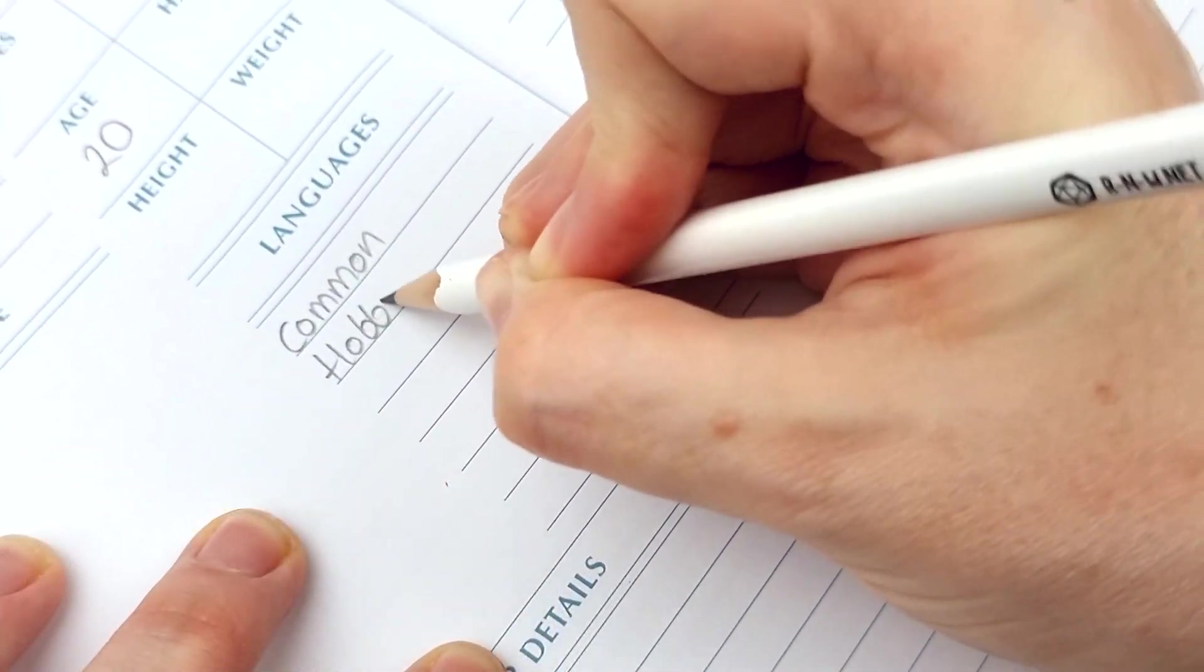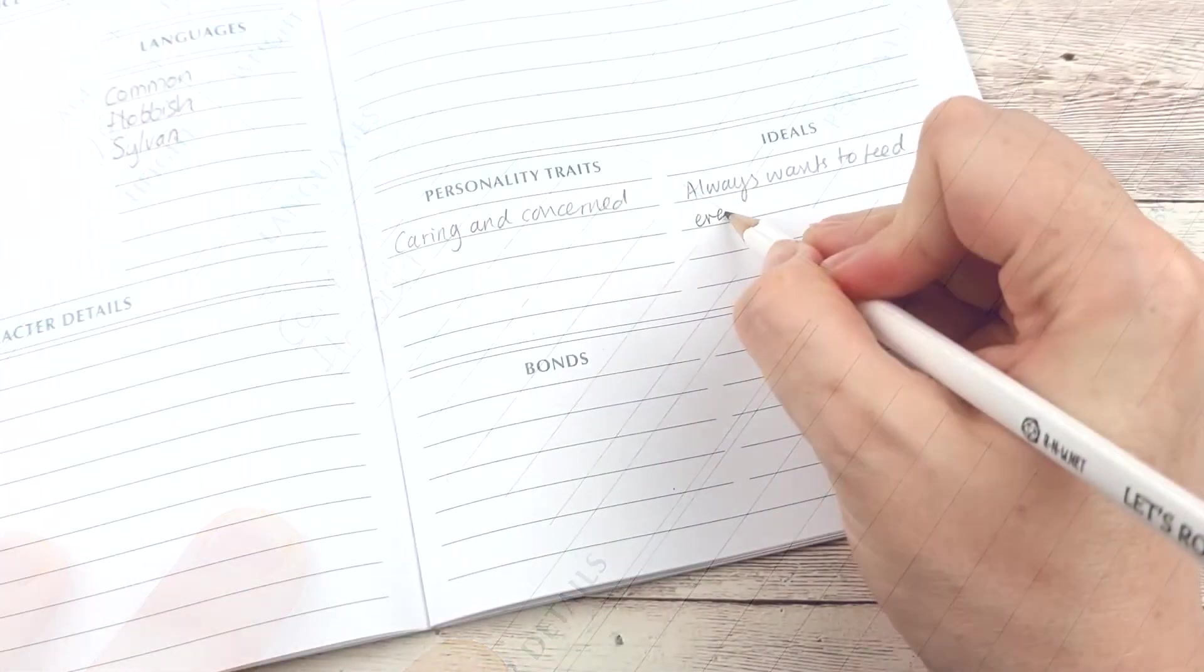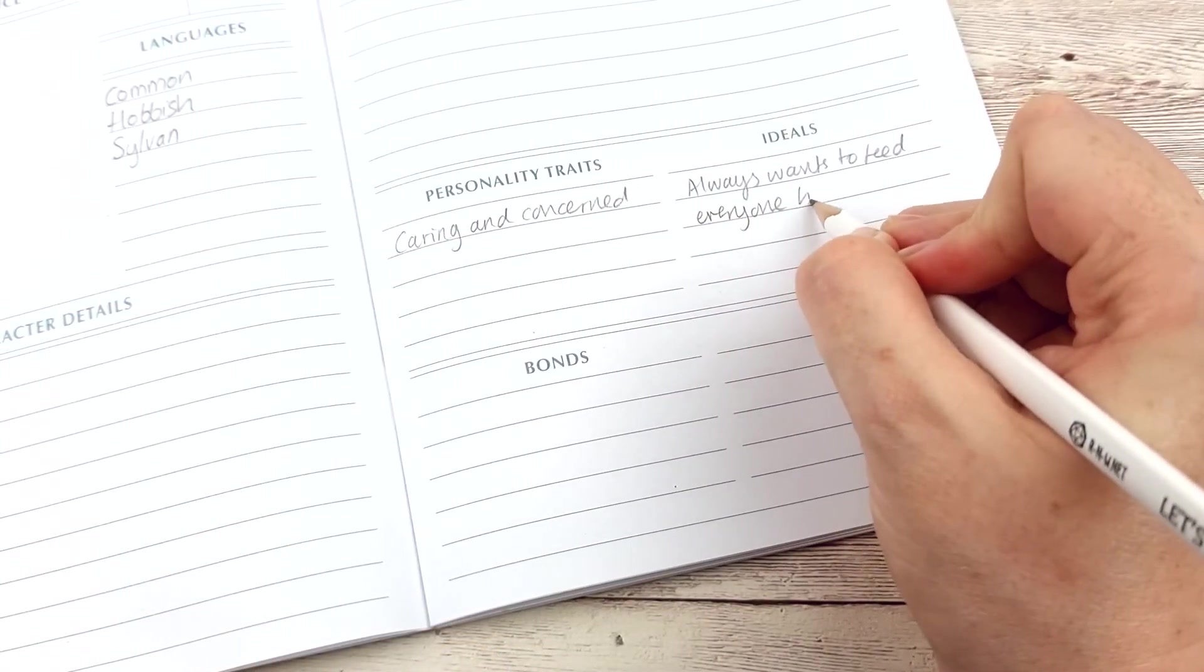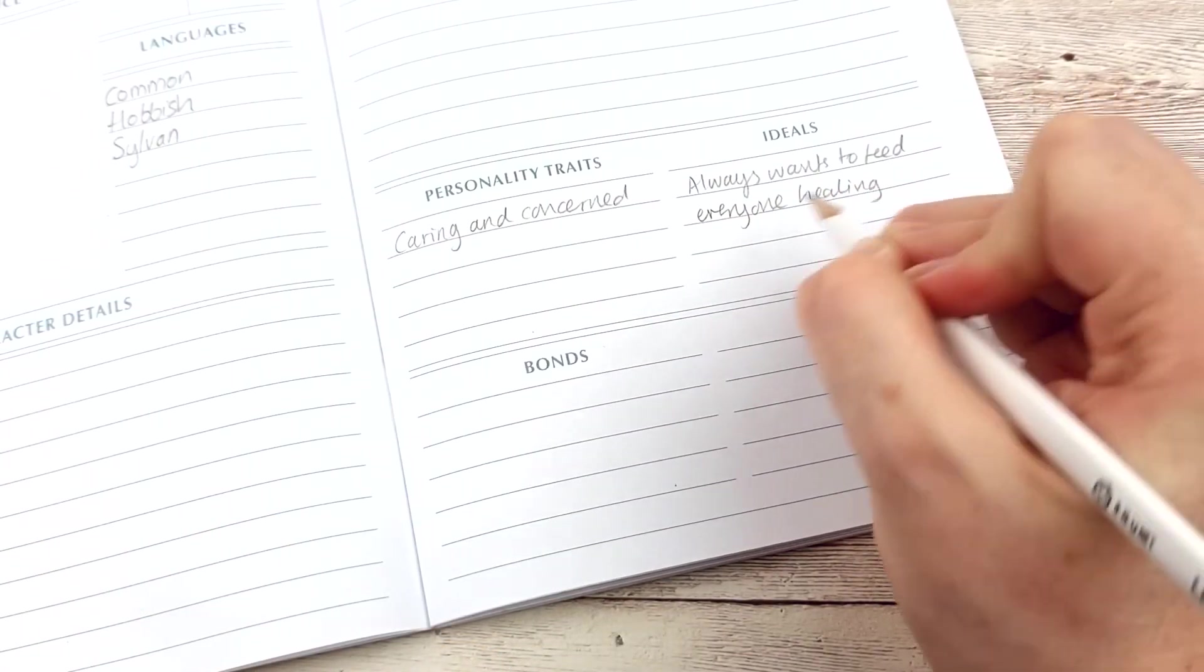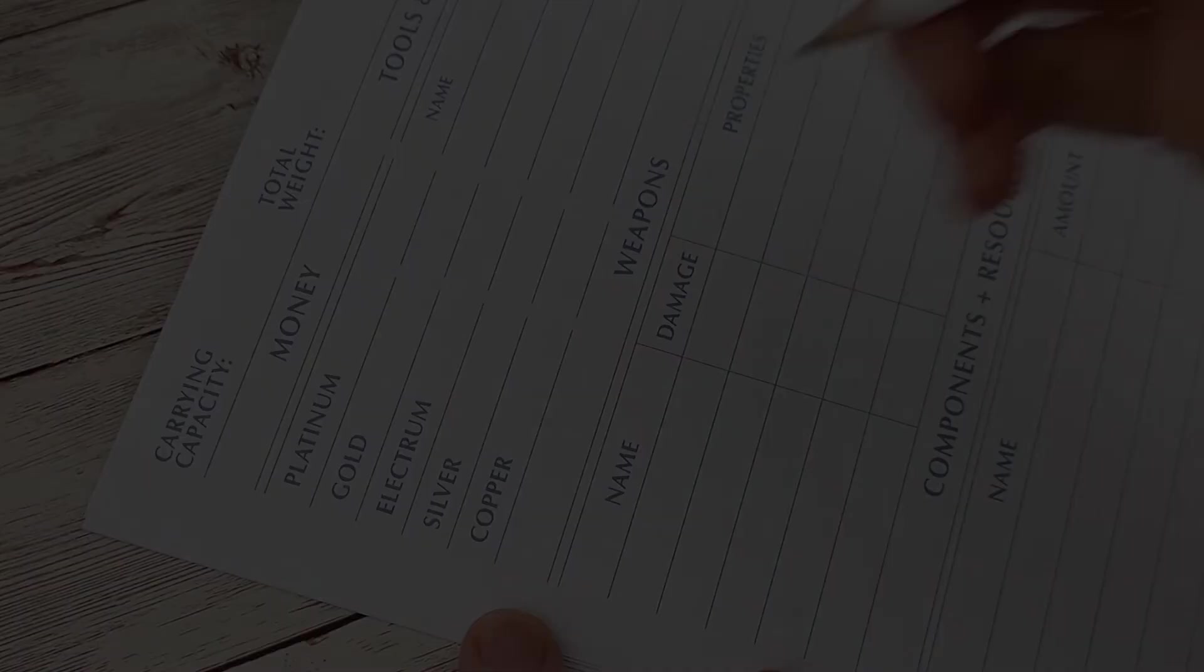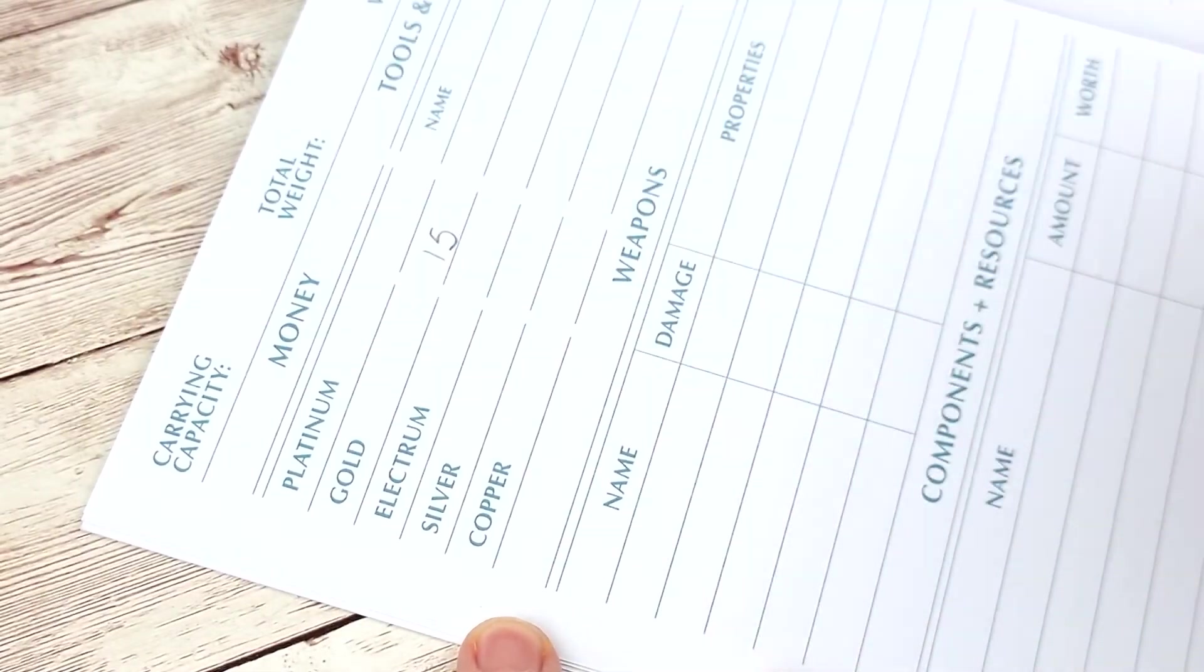On your role playing sheet you can add which languages you know and your personality traits and if you don't like the ones provided with your chosen background it's absolutely fine to come up with some of your own instead. You can also now add your gold and your equipment to your inventory page.